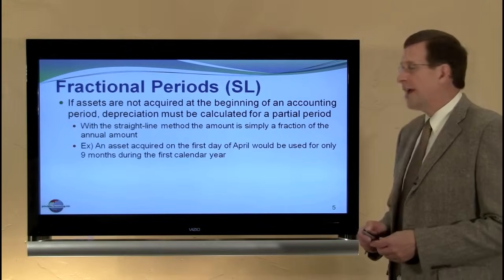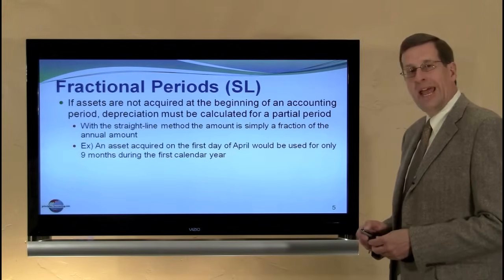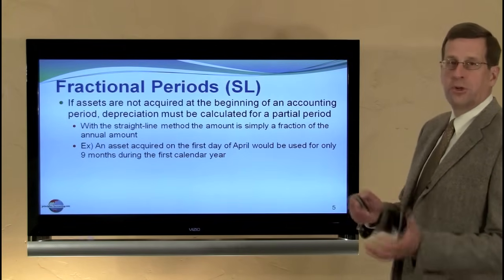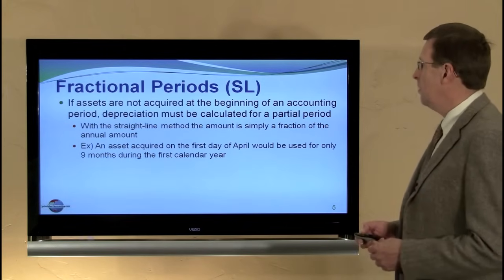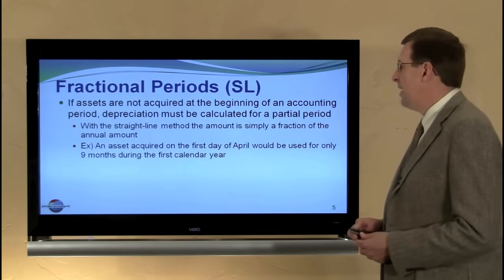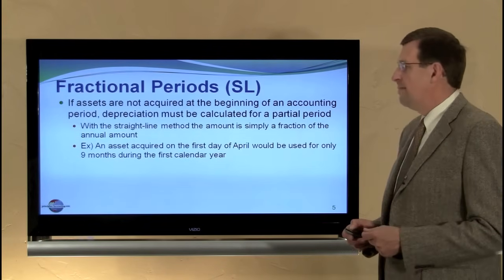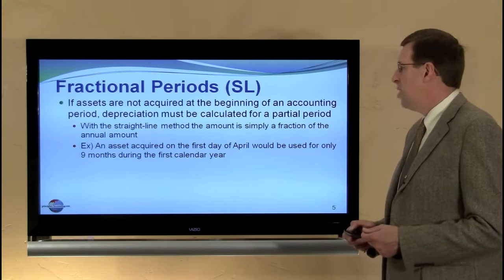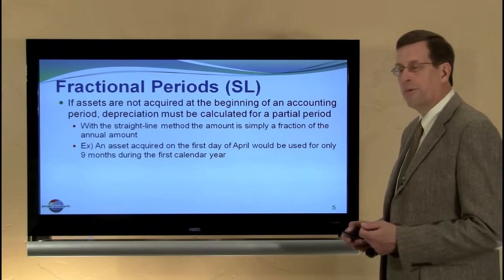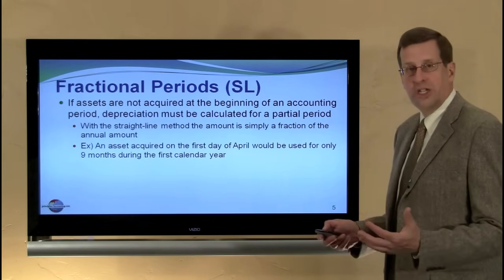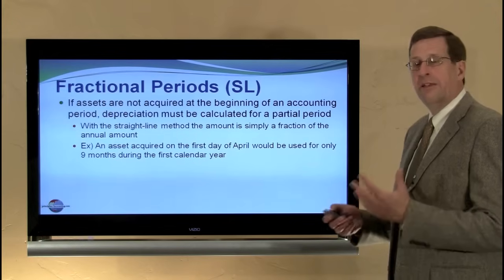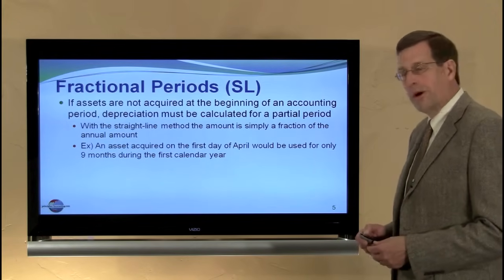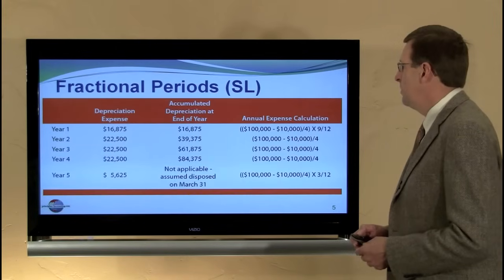If we're dealing with fractional periods, we may not buy an asset on the first day of the year. We might assume that the asset was bought on the first or last day of the year, but we might also start from the date of acquisition. With the straight line method, this is not going to be terribly complex. Let's assume we bought an asset on the first day of April — January, February, and March had gone by — so there's only nine months left in the first calendar year, and we're only going to record nine months worth of depreciation.